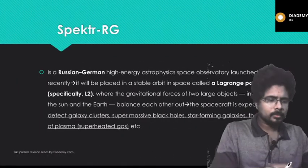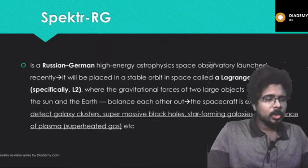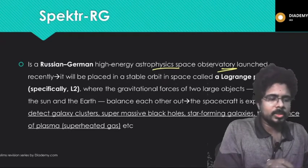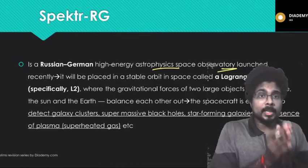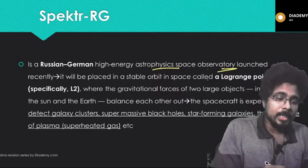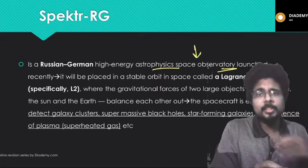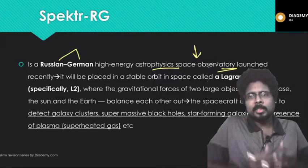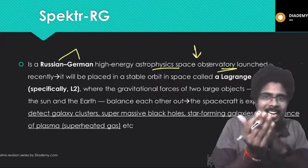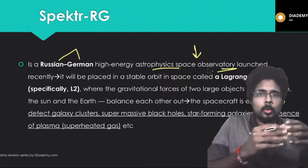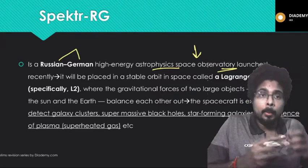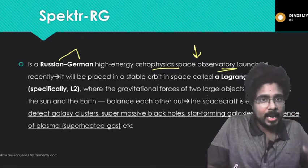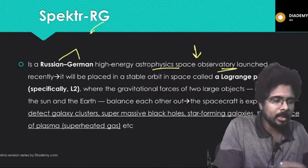First, Spectre RG. What is Spectre RG? It is a Russian-German High Energy Astrophysics Space Observatory. It was launched recently. It is a joint collaboration of Russia and Germany. Generally we might think that Russia is against European countries and there won't be any joint collaboration, but this is indeed a joint collaboration between Russia and Germany.